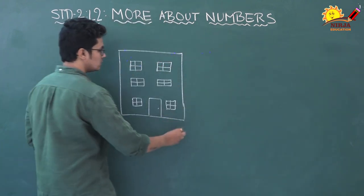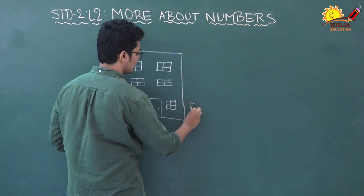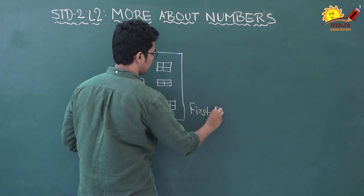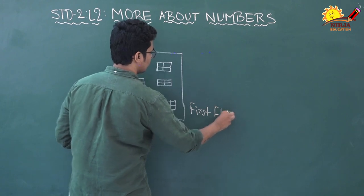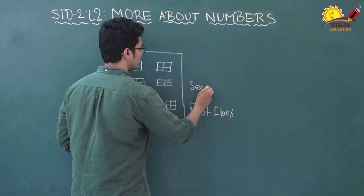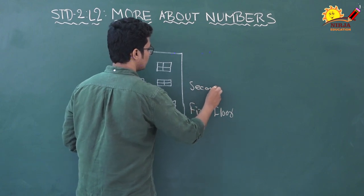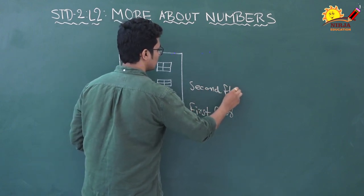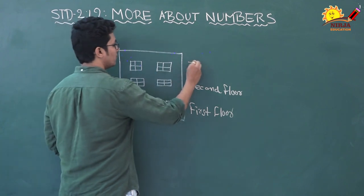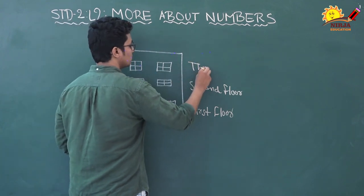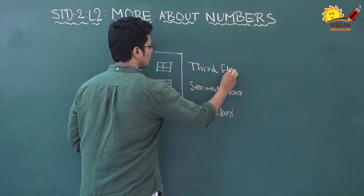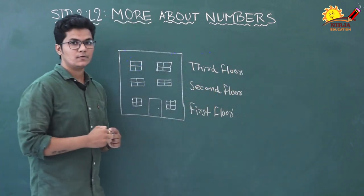This is our second standard, so we use ordinal numbers to represent standards or grades. We also use ordinal numbers for floors in a building — like this is the first floor, this is the second floor, this is the third floor.